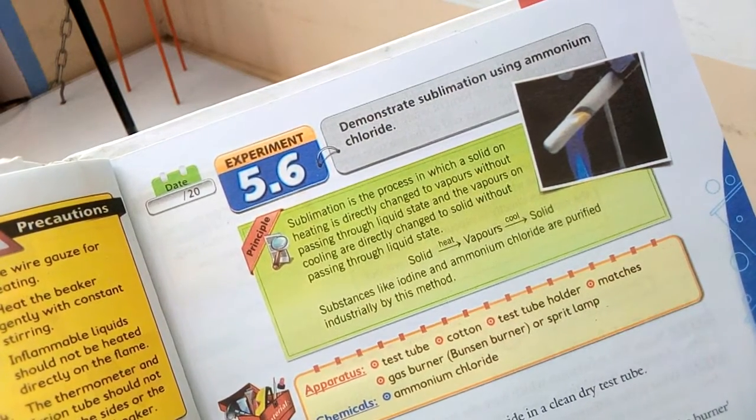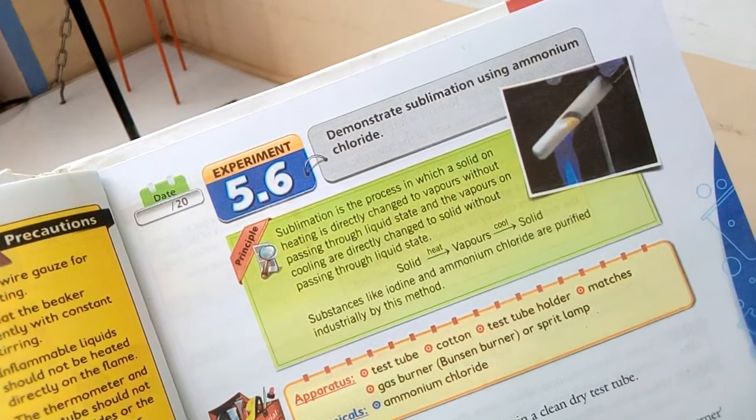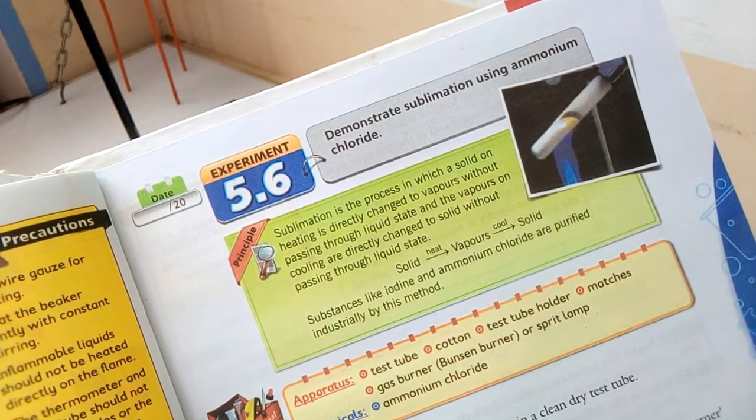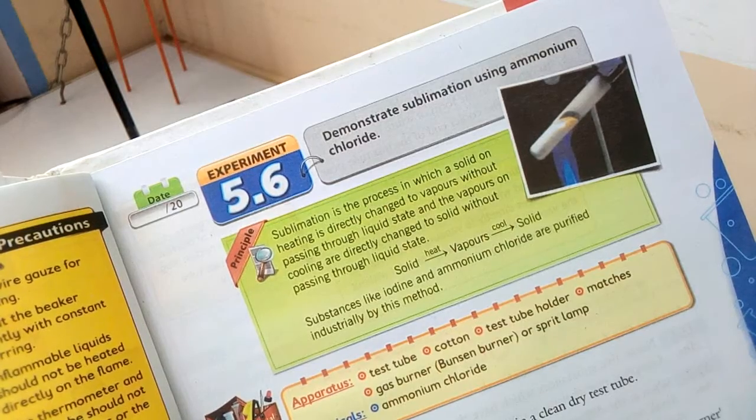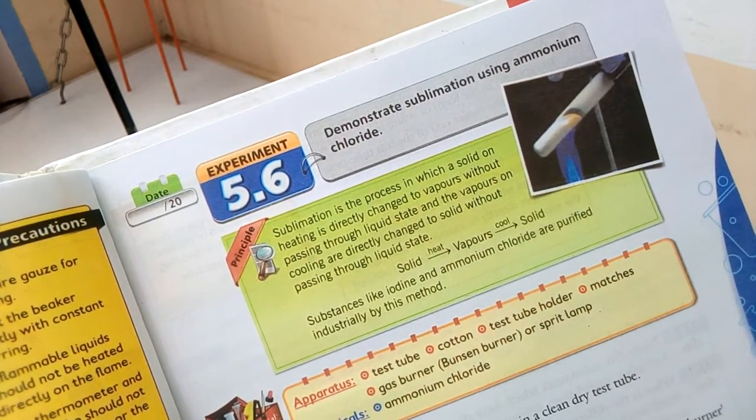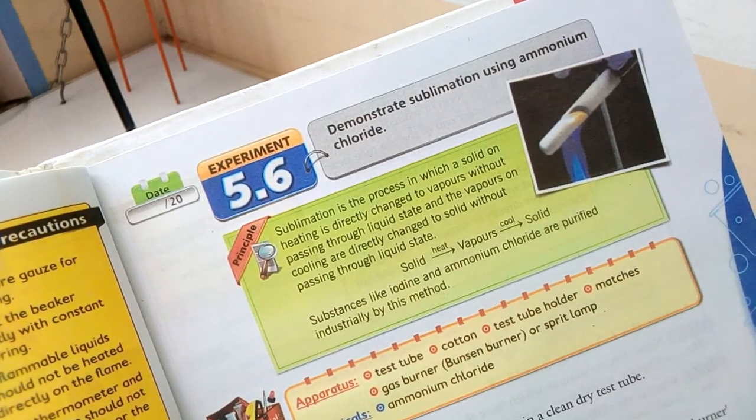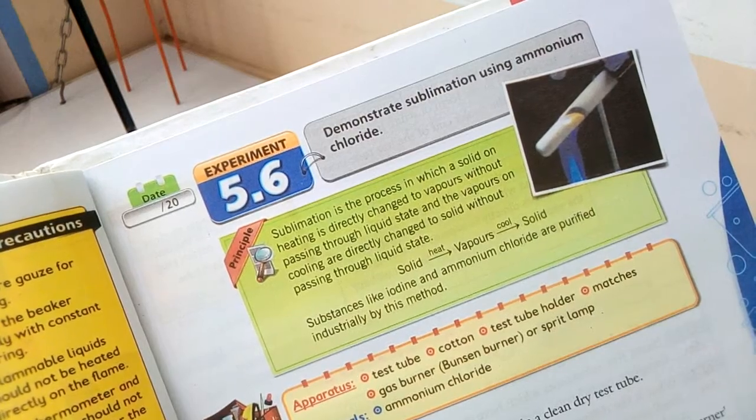Assalamu alaikum dear students, today we will perform experiment number 5.6 to demonstrate sublimation using ammonium chlorite. As you know, sublimation is the process in which a solid is directly changed to vapor on heating without passing through the liquid state.